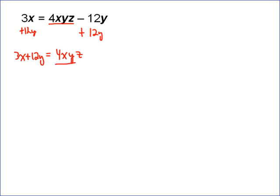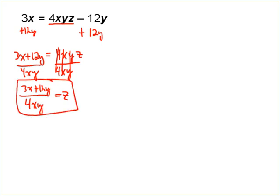So you divide by 4xy, and that's going to cancel out all those terms. You're left with z on the right side equals 3x plus 12y all over 4xy. And that is the correct answer to this problem.